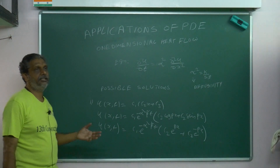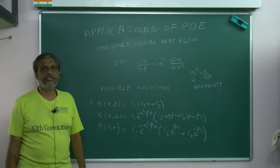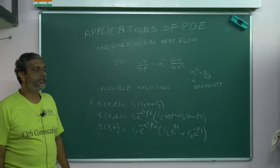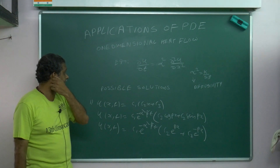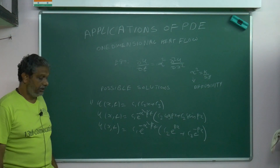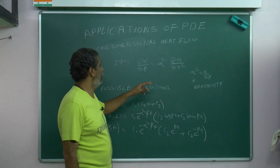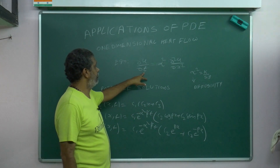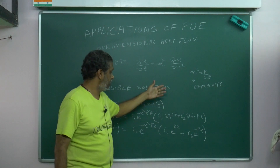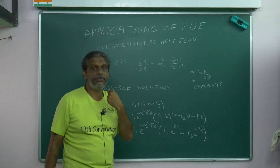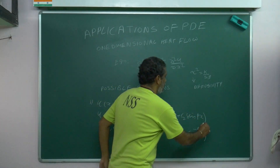Finding the possible solutions, there are such conditions. If you impose all conditions, you will get three different possible solutions. Among these, which is the correct solution? Boundary conditions play the main role. With one initial condition and two boundary conditions, applying all conditions gives us the correct solution.